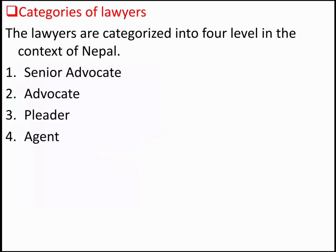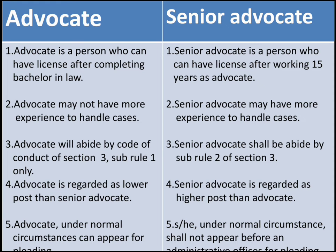In this video we are going to talk about the categories of lawyer. Lawyers are categorized into four levels in the context of Nepal: senior advocate, advocate, pleader, and agent. Along with their discussion, we will also look at the differences between senior advocate and advocate, and between pleader and agent. Advocates and senior advocates are persons who work in legal practice, especially in court-related matters and cases.